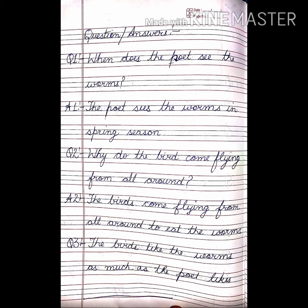Question 2: Why do the birds come flying from all around? Answer 2: The birds come flying from all around to eat the worms.